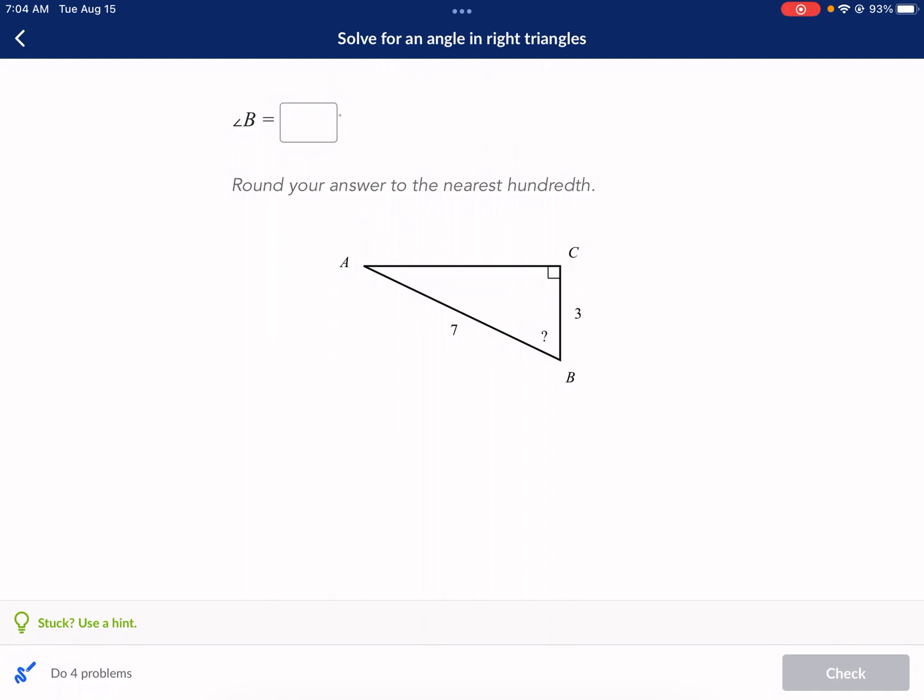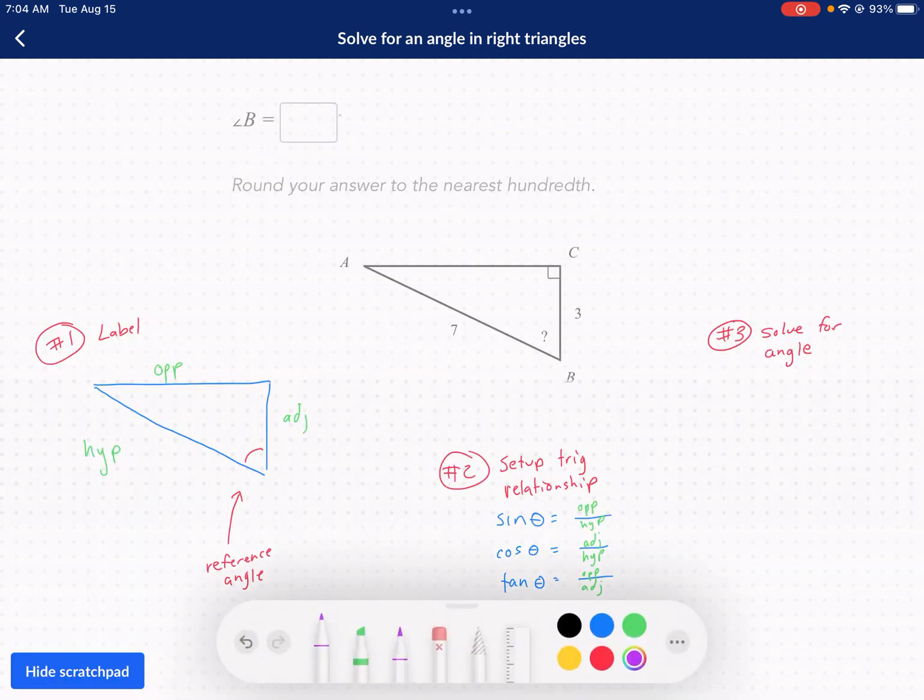Anyway, we're solving for angles in right triangles here. I'll show you what we're going to do. This is for trigonometry concepts in geometry. We're trying to find angle B here, it shows us the triangle, says to round to the nearest hundredth. Let me walk you through some of the steps. This is going under the assumption that you have some training in setting up trig ratios. Let me give you the rundown.